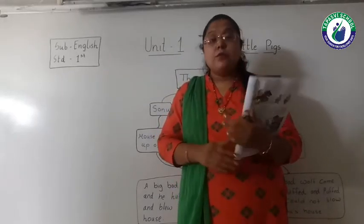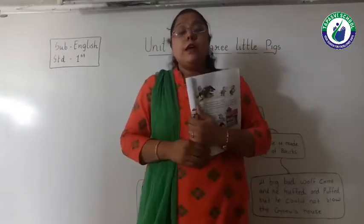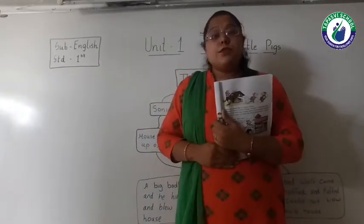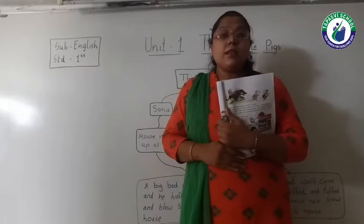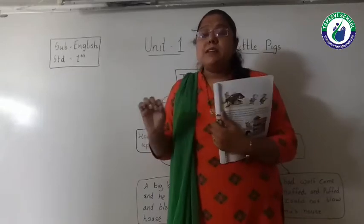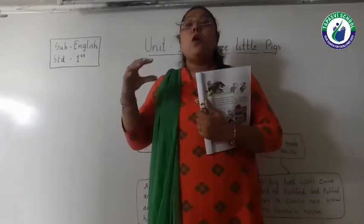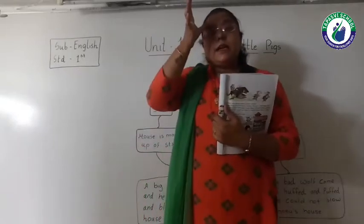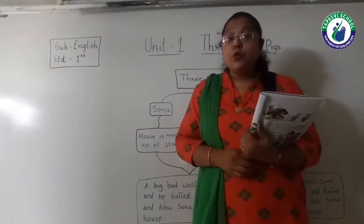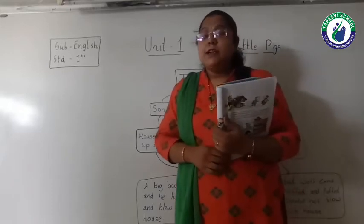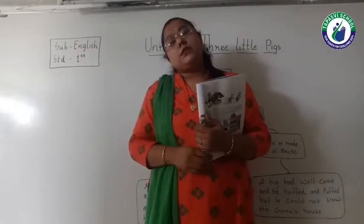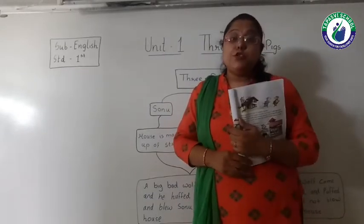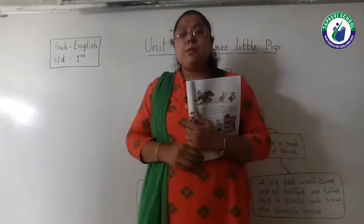Sonu lived in a house of straw. Straw means dry plants and dry grains — we call it straw. Monu lived in a house of sticks. Stick means a wooden stick. So Monu was living in a house made of sticks.